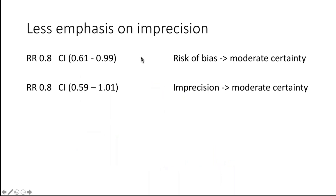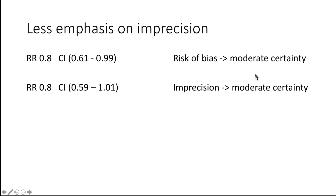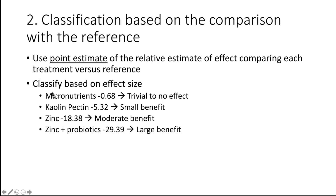This approach places less emphasis on imprecision in the context of a GRADE rating. For example, if you had a point estimate of 0.8 with a confidence interval of 0.61 to 0.99, it would be precise. But with risk of bias and moderate certainty, you would not place higher certainty in an estimate that may not be statistically significant — versus a confidence interval overlapping one with no risk of bias but slight imprecision, both with moderate certainty. Therefore, in this approach, we focus on the point estimate of the effects.